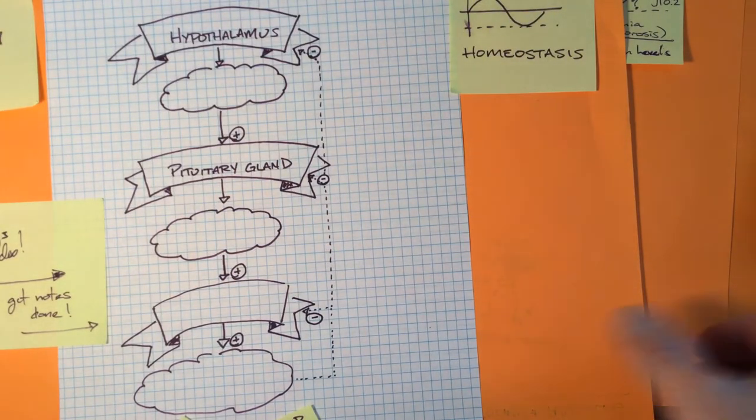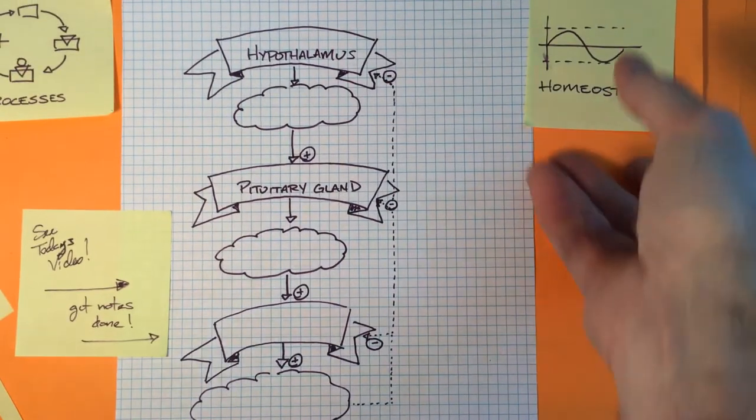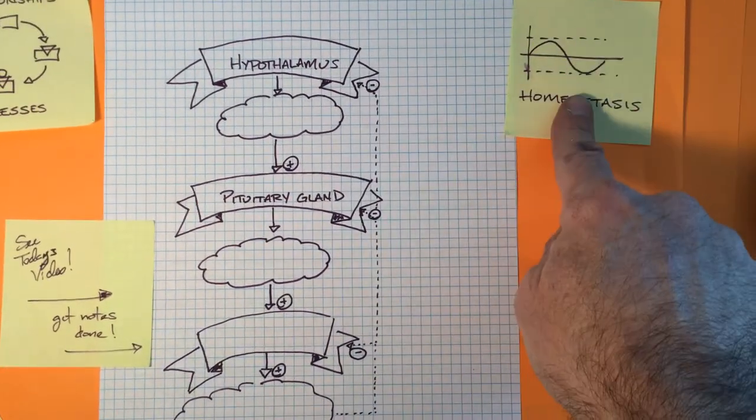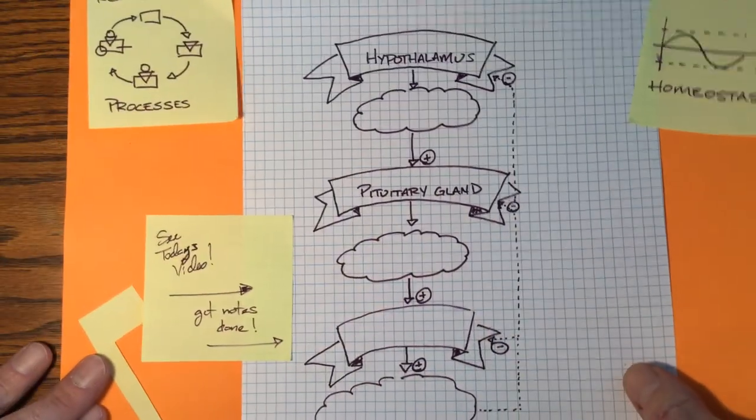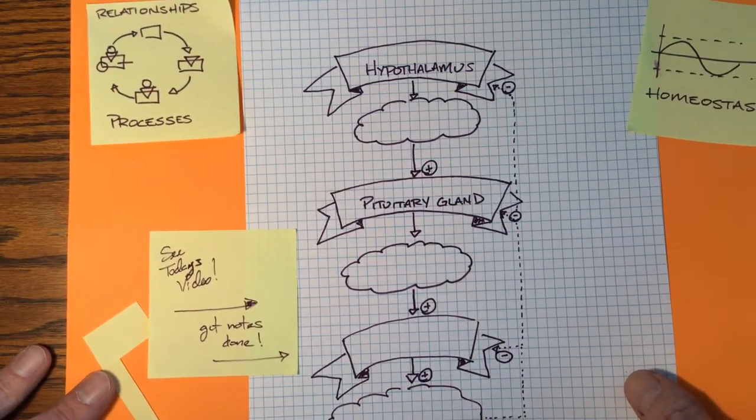What we're looking at, and again just to remind you, this is a part of studying the system where we're looking at homeostasis, but we're also looking at relationships and processes. And you really can't separate the two.